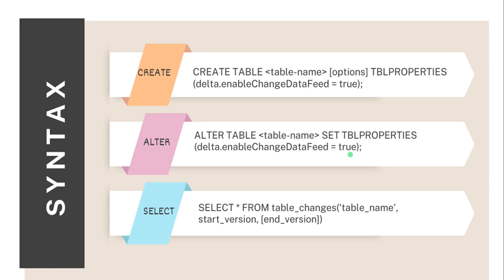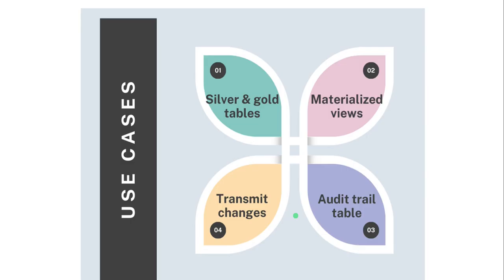This ALTER TABLE approach will track changes only after the enable — whatever versions or changes happened before this enable will not be considered. When we have enabled this feature, to view those changes, Databricks provides the built-in function 'table_changes'. We pass the table name as an input parameter, and also specify a starting version from which we want to see the records. The ending version is optional; if not given, it returns all records up to the latest version.